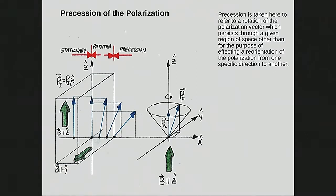Question: Does an electric field also affect this? No — the neutron aligns only with the magnetic field. This is different from light, which has both electric and magnetic vectors. The neutron just has the magnetic component.